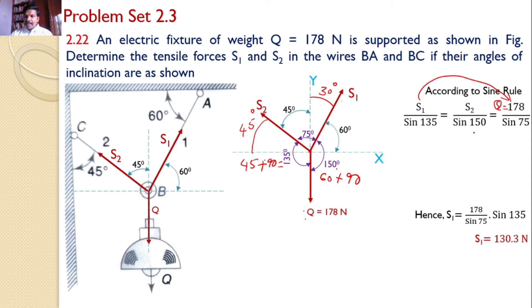Similarly, by considering these two, S2 equals 178 by sin 75 times sin 150, which gives the value of 92.14 Newtons. These two are the answers for this problem.